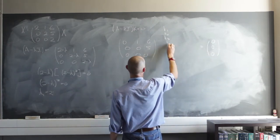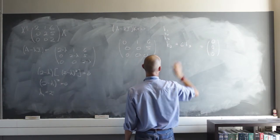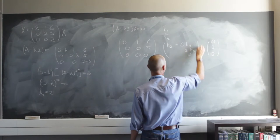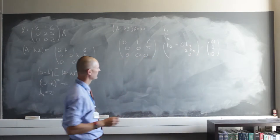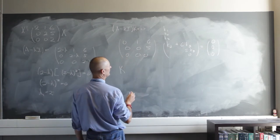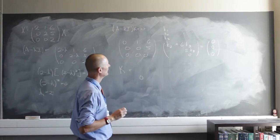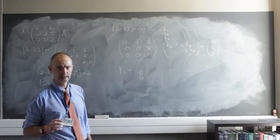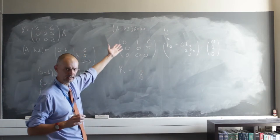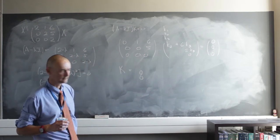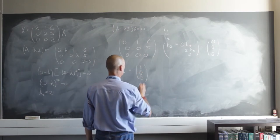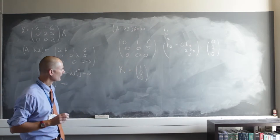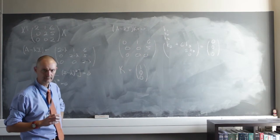From the system we get: k sub two plus six times k sub three equals zero, and five times k sub three equals zero. So k sub three must be zero, and if k sub three is zero then k sub two is also zero. That leaves k sub one free to be anything. We won't choose zero because that gives the trivial eigenvector, so we put in one. We can only get one eigenvector for this eigenvalue.